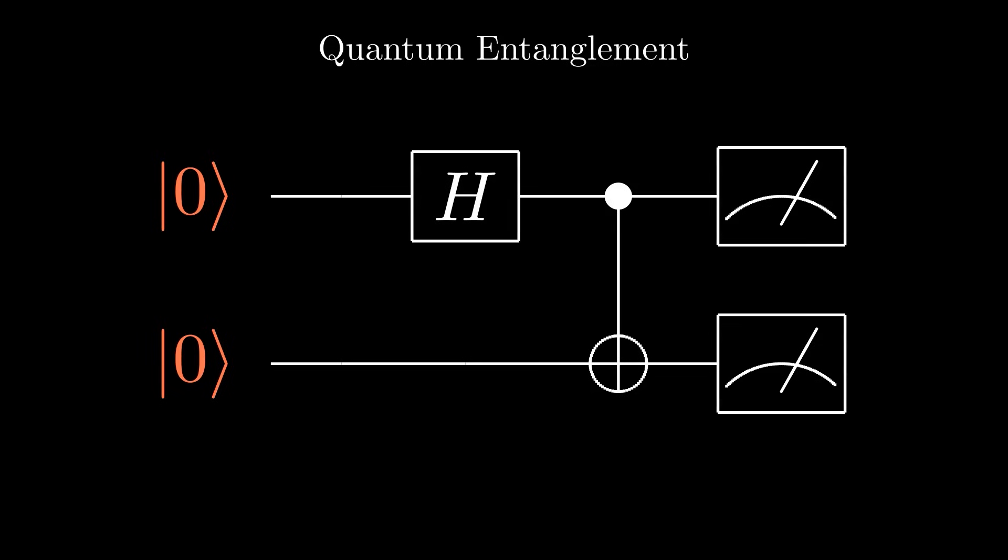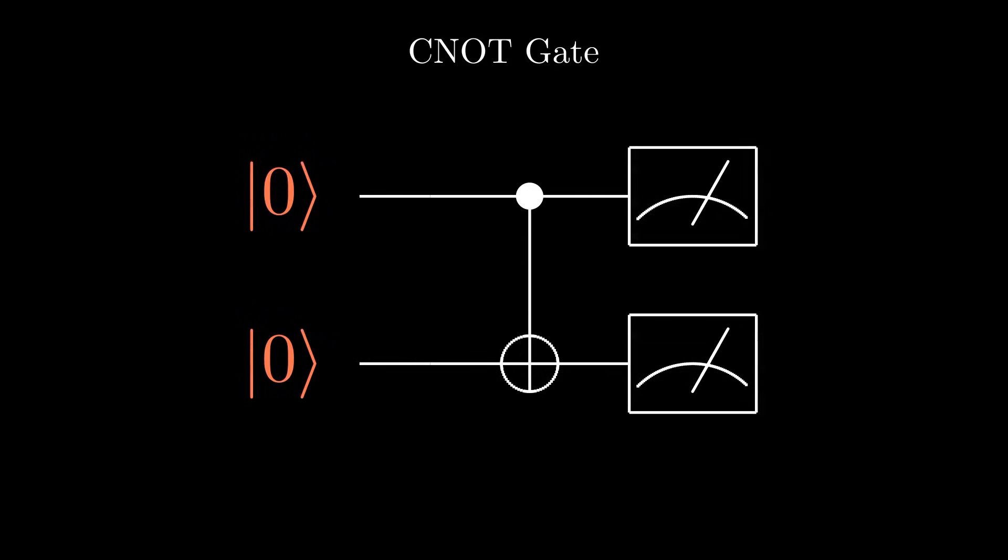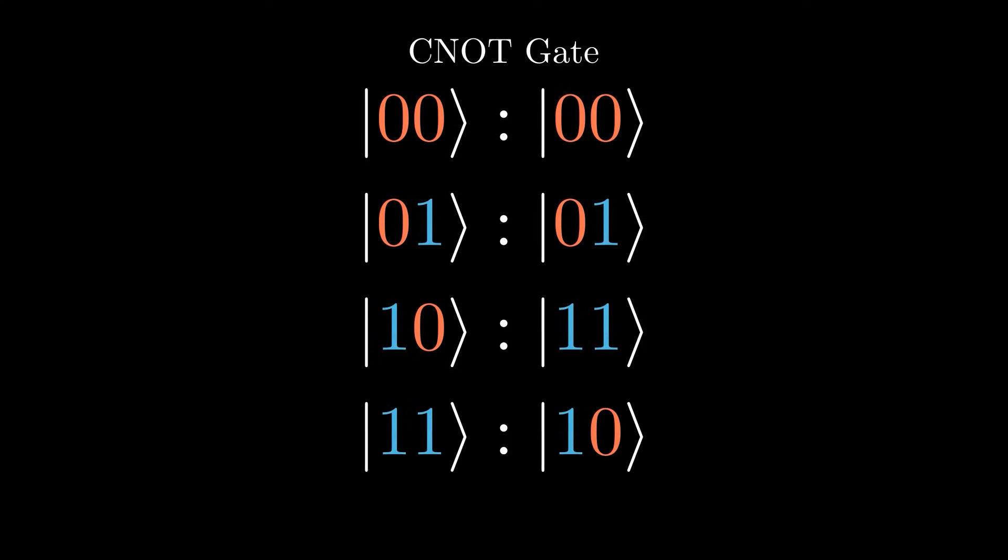So how can we represent this circuit mathematically? Well, let's take a step back to understand what our Controlled Knot gate, or CNOT, does. This is our first look at a two-qubit quantum logic gate, so let's see what's happening with both of our qubits. If the first qubit is a zero ket, then it does nothing. But if it's a one ket, then it's as if a knot gate is applied to the second qubit. So if it's a zero ket, it becomes a one ket, and vice versa. The first qubit is called the control qubit, because it controls whether we apply a knot gate to our second qubit, which is called the target qubit.